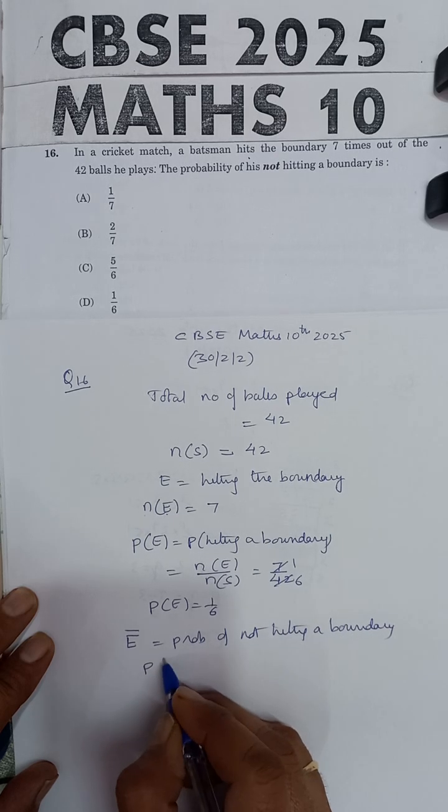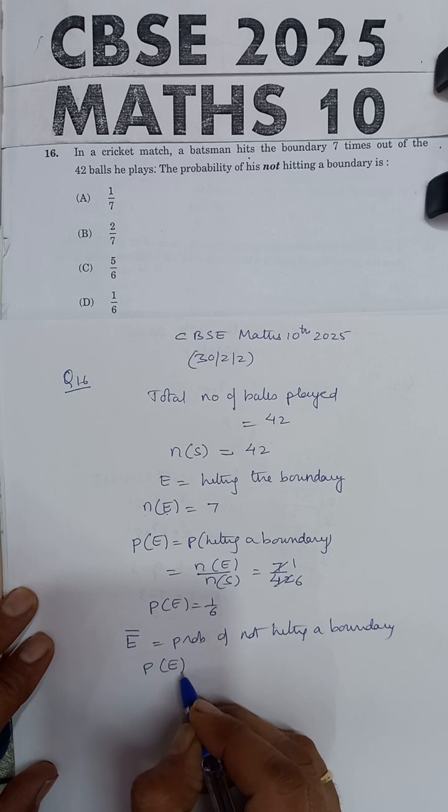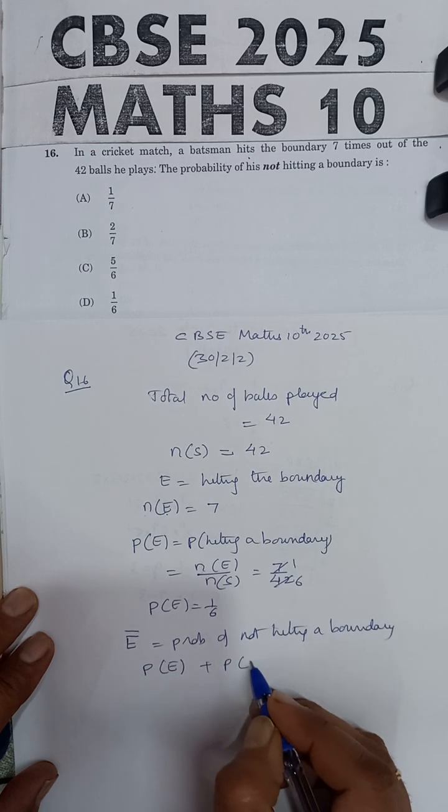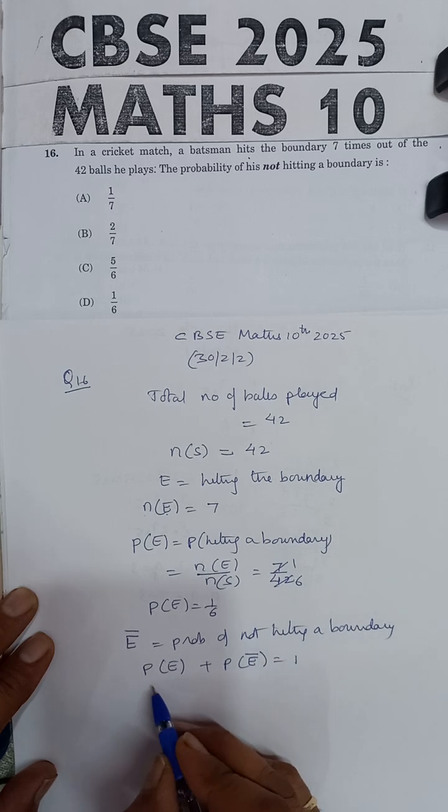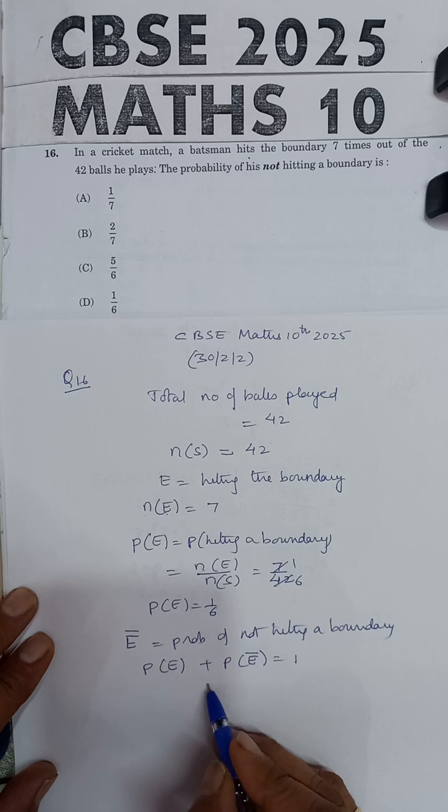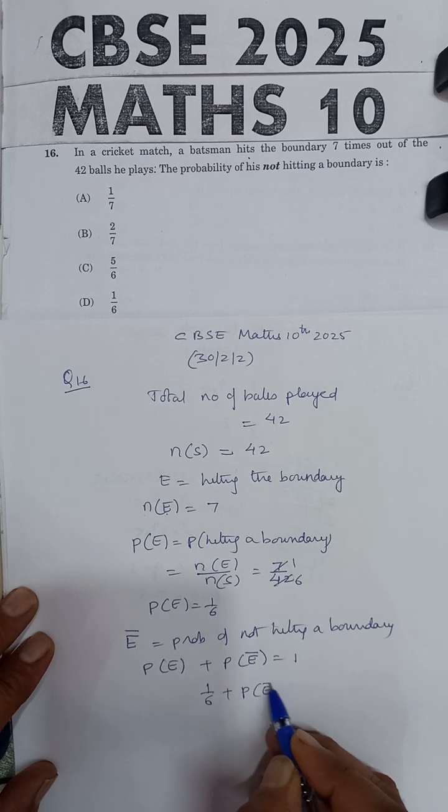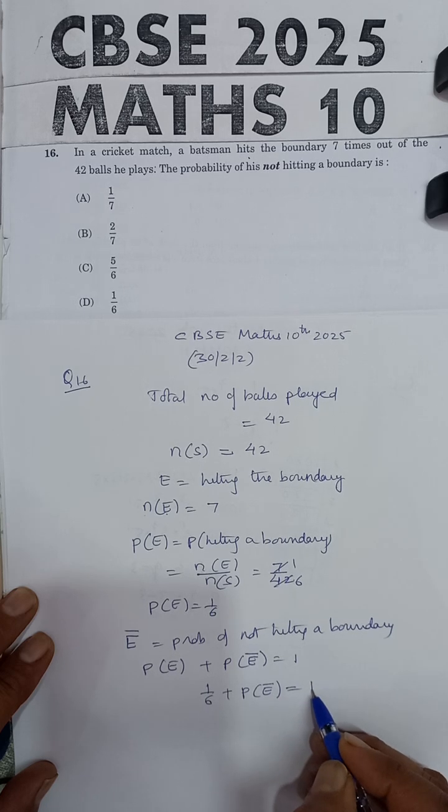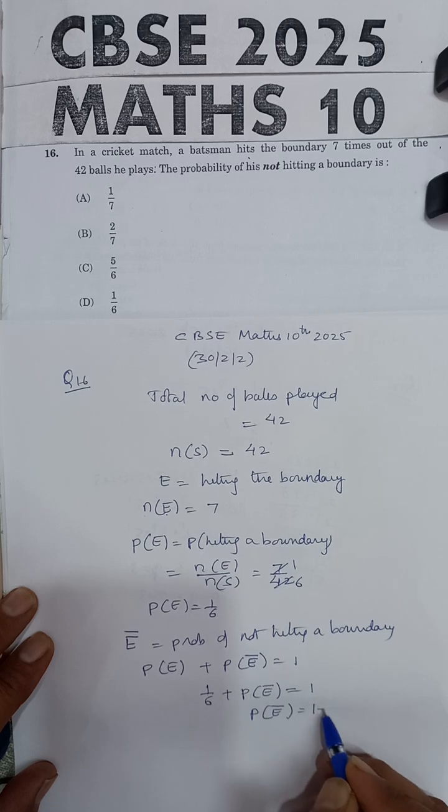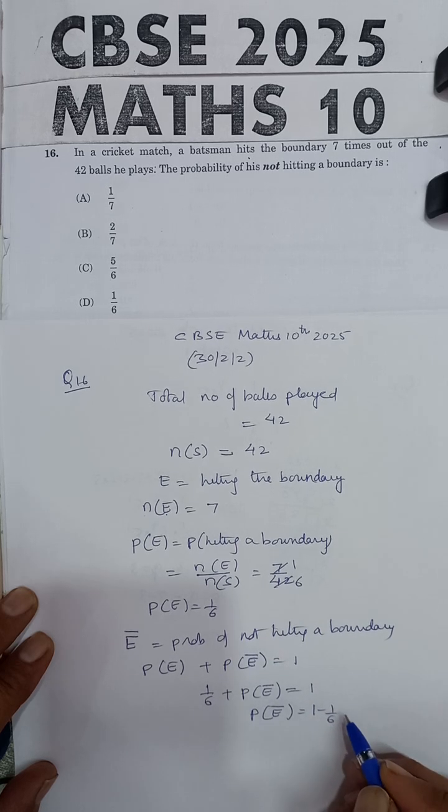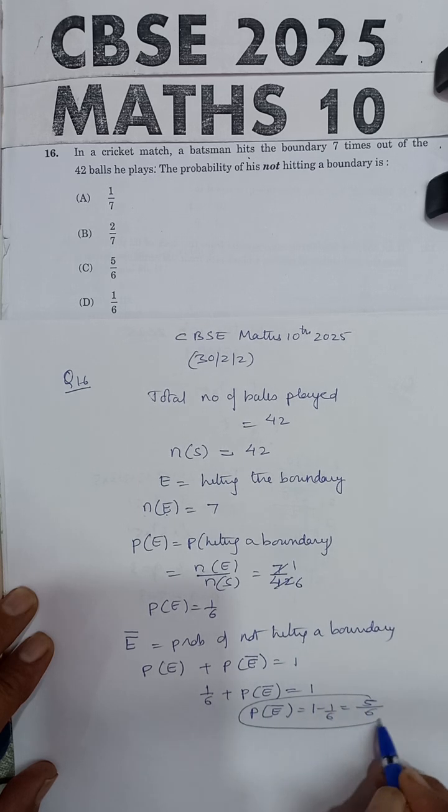So we know the fact that probability of happening of any event and probability of the same event not happening is equal to 1. So probability of hitting the boundary is 1 by 6. Probability of not hitting the boundary we need to calculate. This will be equal to 1. So probability of not hitting the boundary will be 1 minus 1 by 6. LCM is 6, so 6 minus 1 is 5. So 5 by 6 is the probability of not hitting the boundary.